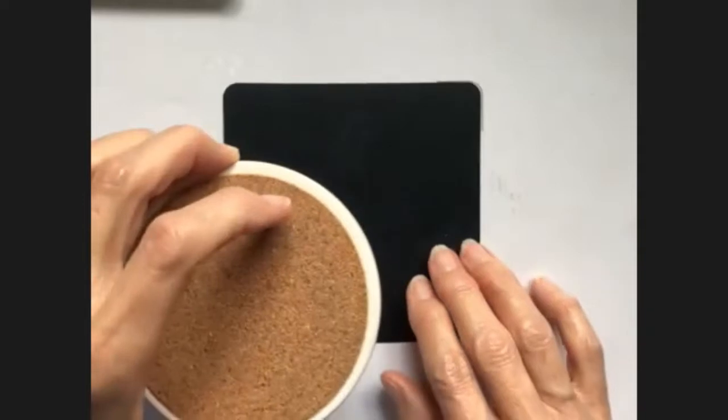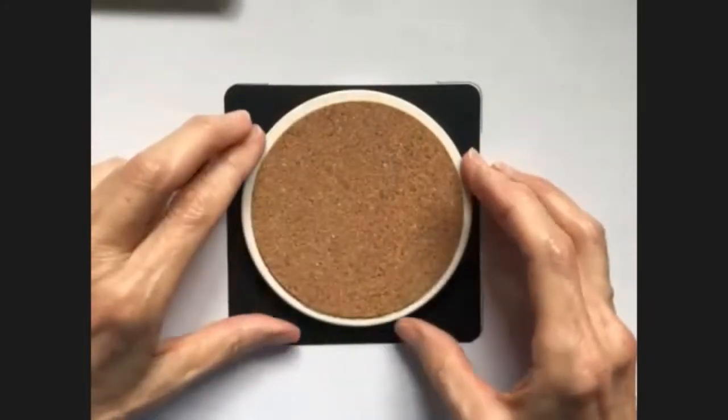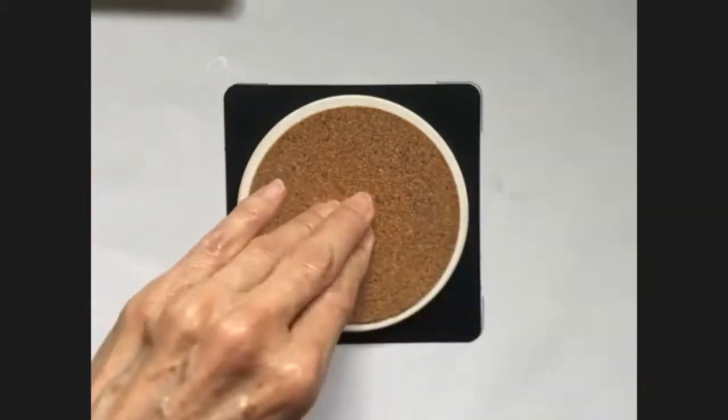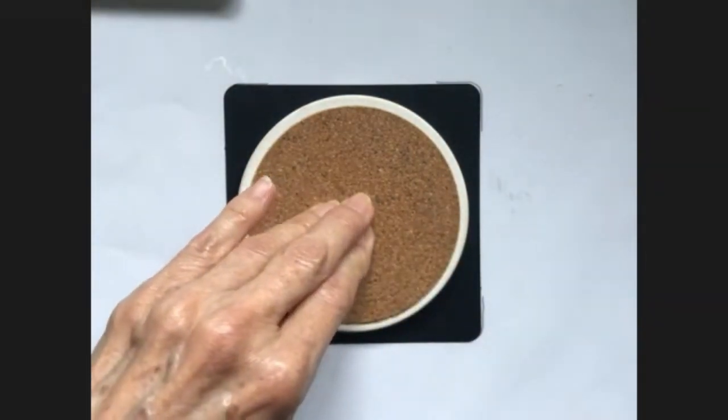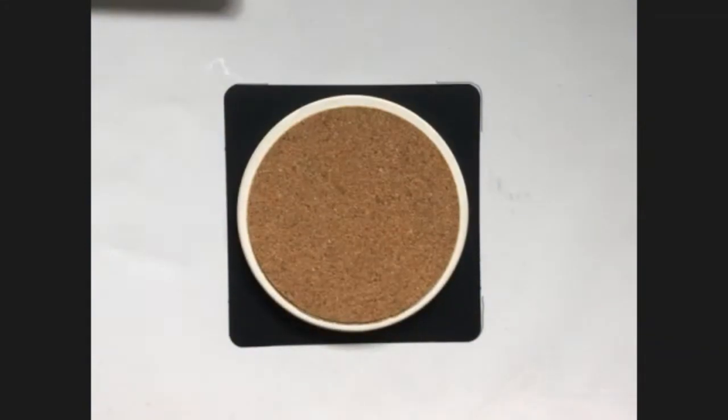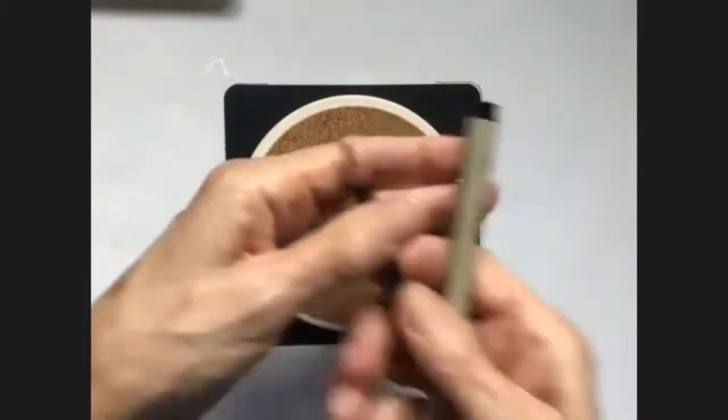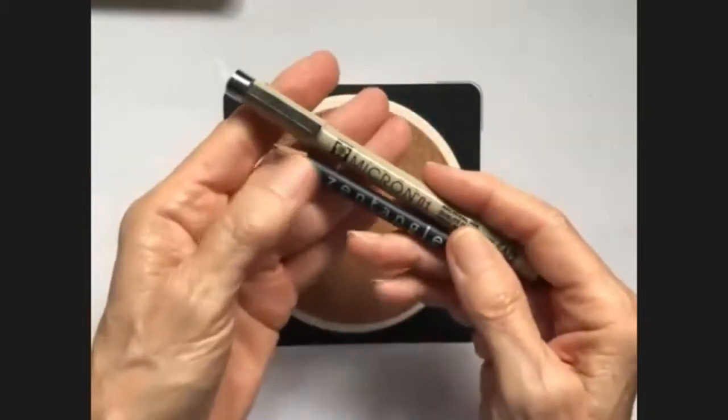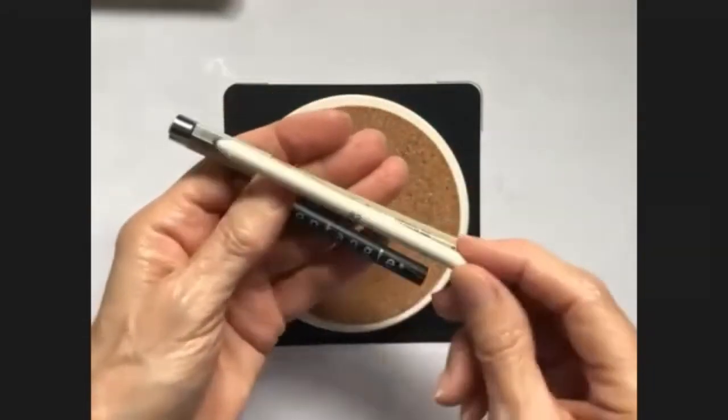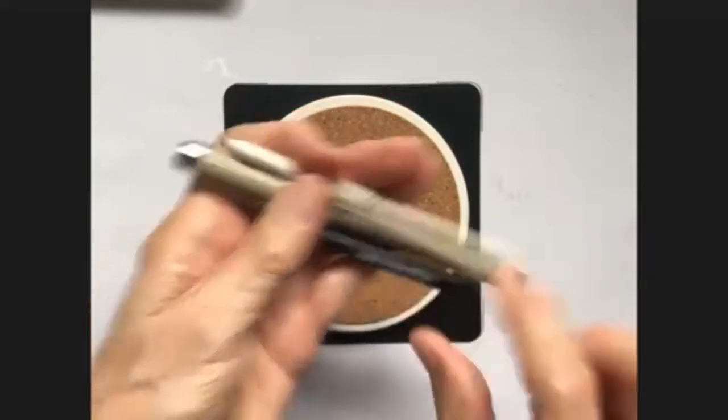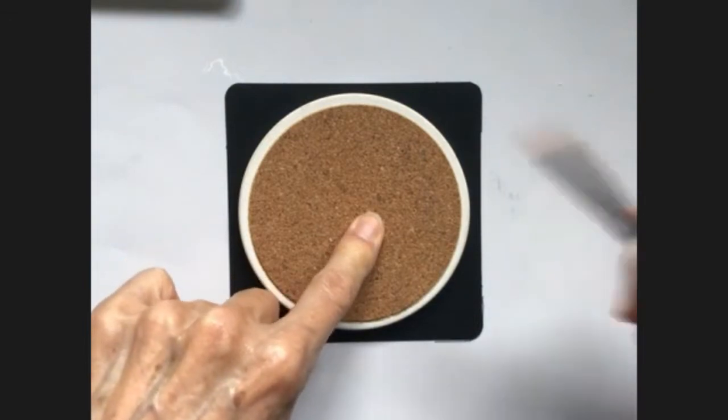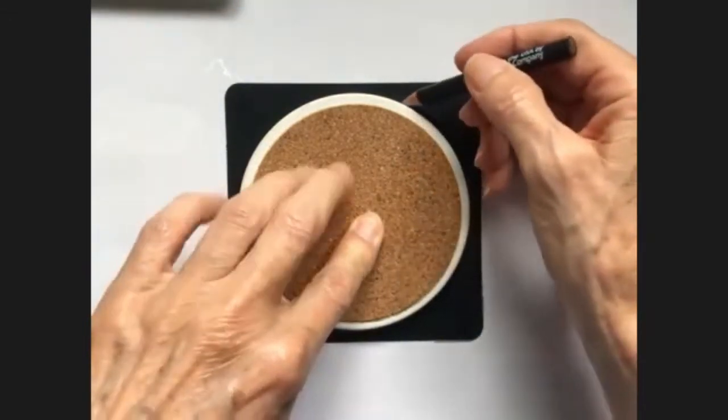So, I'm going to show you real quick how to get this started. For demonstrating, I'm going to use the Micron 01 and Graphite Pencil and my Blending Stump. But for this actual tile, I am still going to use the Graphite Pencil to make my line.